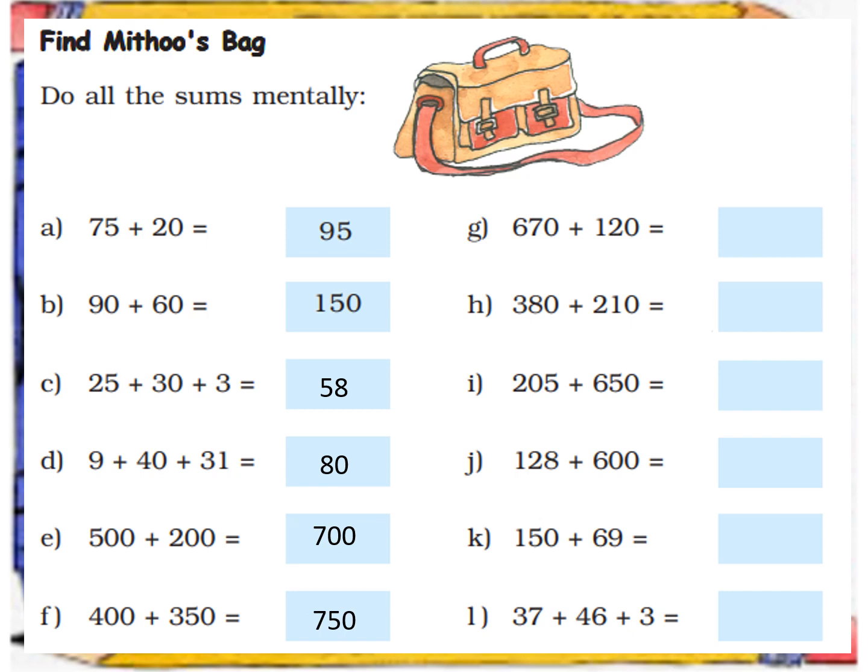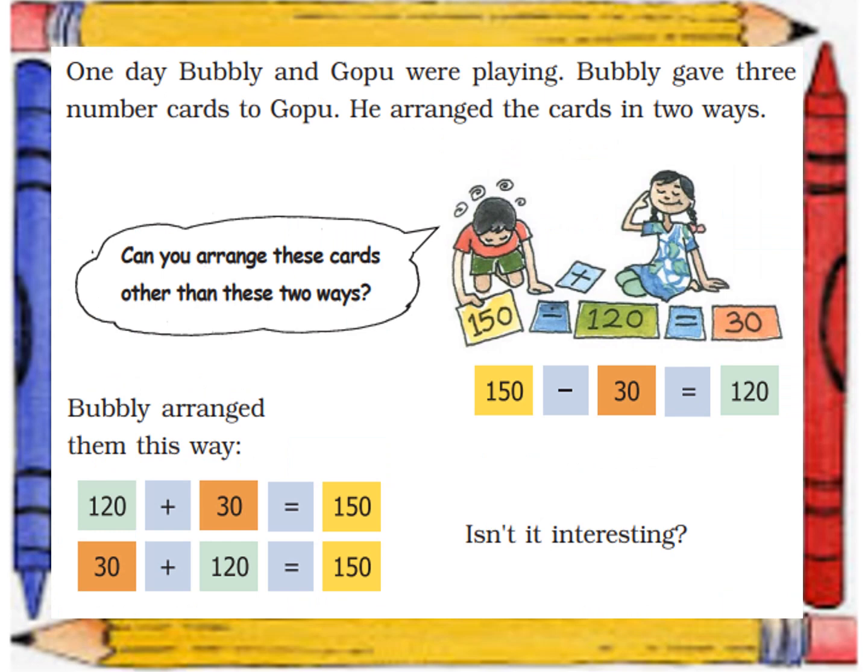You will do the other sums yourself by applying one or more tricks. They will be very easy if you will apply the tricks carefully. Now let us do one more mental maths question. One day Bubbly and Gopu were playing. Bubbly gave three number cards to Gopu. He arranged the cards in two ways. He used the operation minus for it. 150 minus 120 is 30. Well, Bubbly arranged them in a different way. She used addition for arranging them. 120 plus 30 is equal to 150, or 30 plus 120 is equal to 150.